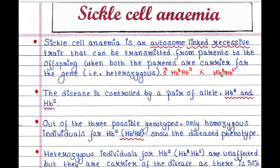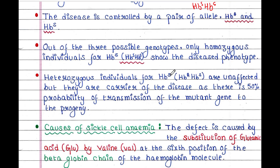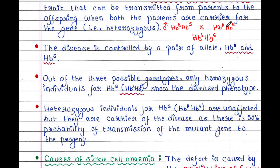If unfortunately the baby receives both the mutant alleles, that means the baby's genotype is HbS and HbS. So out of the three possible genotypes, only homozygous individuals for HbS show the diseased phenotype. Heterozygous individuals for HbA are unaffected — like the father and mother, they are unaffected — but they are carriers of the disease, as there is a 50 percent probability of transmission of the mutant gene to the progeny.